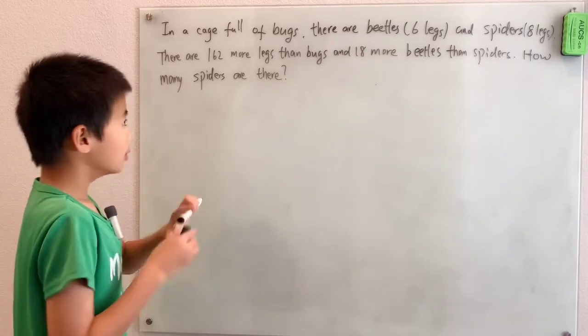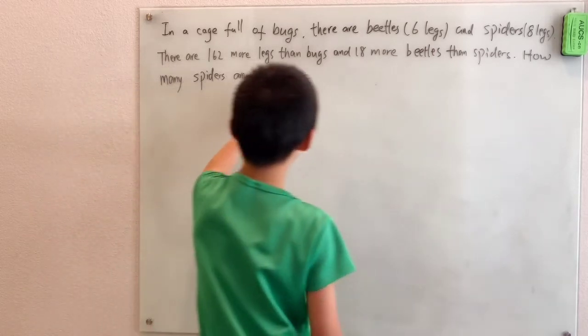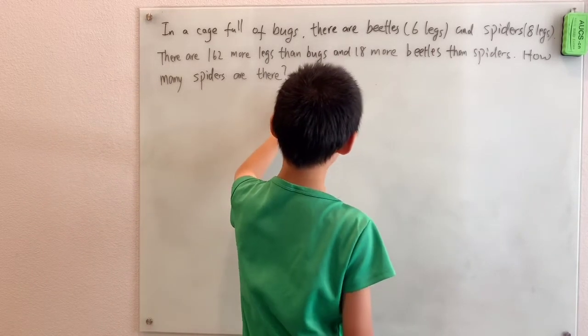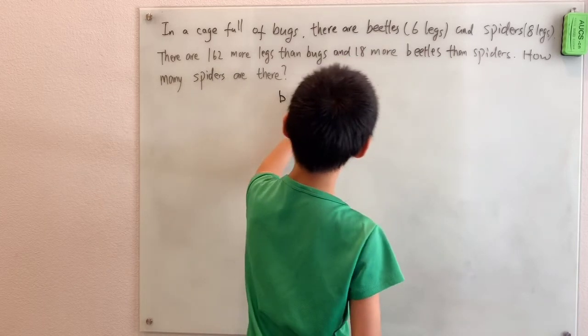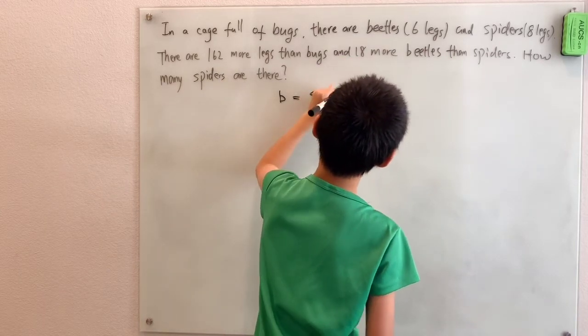Well, in this problem, we have the number of beetles, I'll say B, and the number of spiders, S. We're given that there are 18 more beetles than spiders, so B is S plus 18.